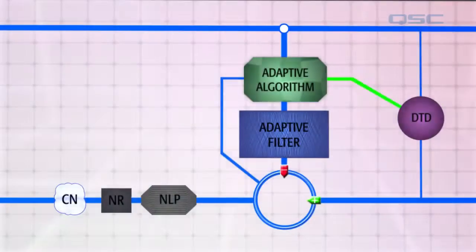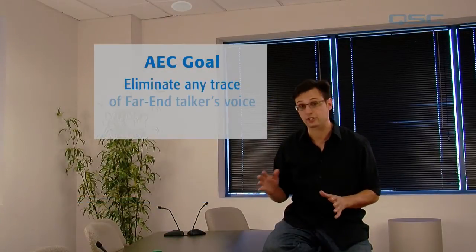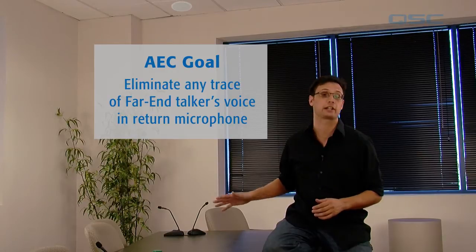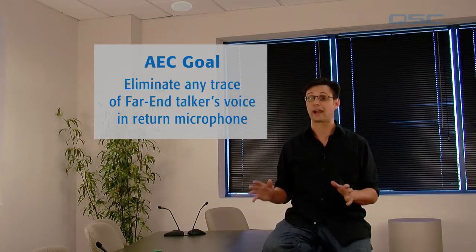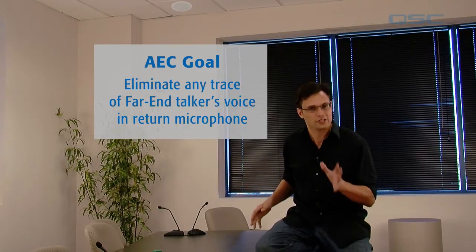Let's start with the adaptive filter. AEC's goal is to eliminate any trace of the far end talker's voice from the near end microphone feed, including all direct and indirect paths from the loudspeaker to the microphone. In order to delete this noise, AEC needs to be able to predict what that noise is going to sound like.